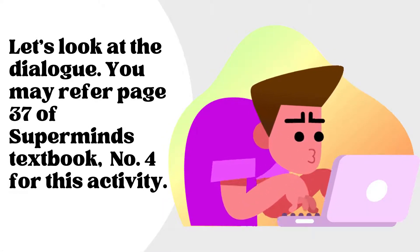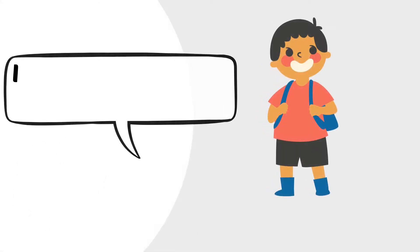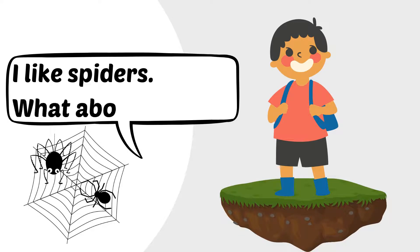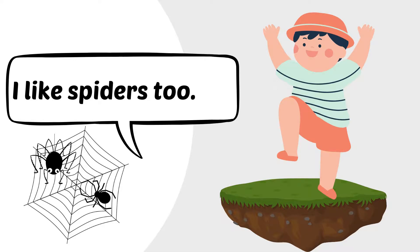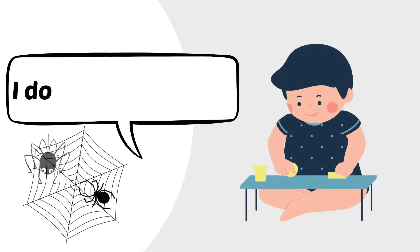Now let's look at the dialogue. You may refer to page 37 of Supermind textbook number 4 for this activity. Are you ready? Say with me: I like spiders. What about you? I like spiders too. I don't like spiders.